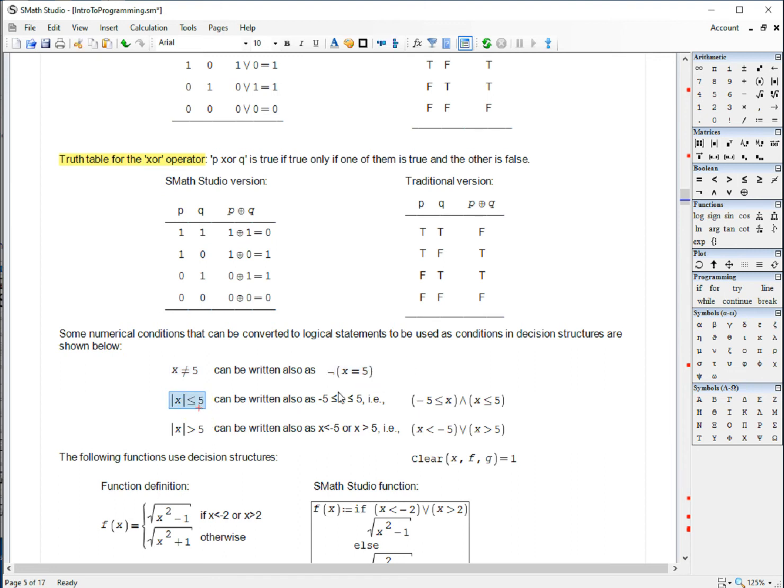The absolute value of X less than or equal to 5 can be expressed as minus 5 less than or equal to X, and X less than or equal to 5. Absolute value of X greater than or equal to 5 can be expressed as X less than minus 5 or X greater than 5. And so, that's how you can form more complex logical statements.